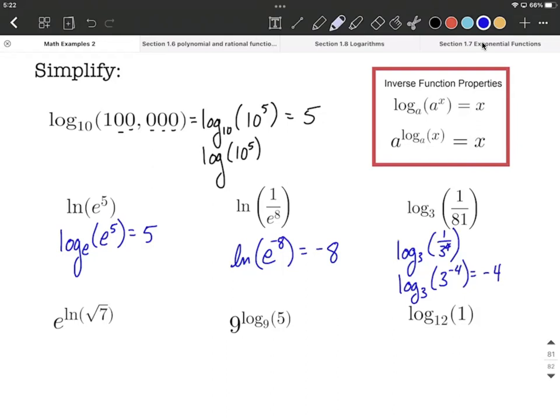On the bottom, you can see a few of the more specialized cases. In this case, we have e raised to the natural log of the square root of seven. Well, remember that natural log automatically means log base e, so we've got nice composition,